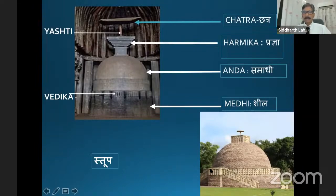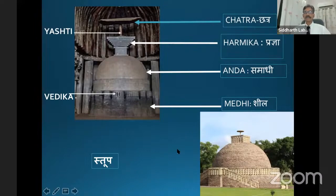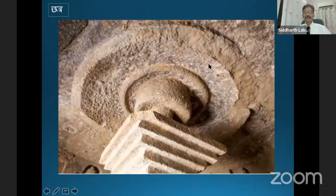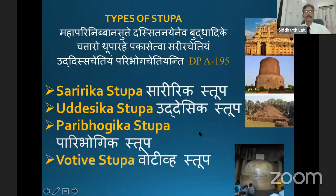The Stupa at Nagpur's Diksha Bhumi is a master example of the Stupa of this kind. The entire structure is based on all these criteria — you will find Medhi, Anda, Haramika, and Chatra. That is the masterpiece. Here the Chatra is stuck to the roof — that is what I was telling you. In the earlier case, it was a wooden Chatra.